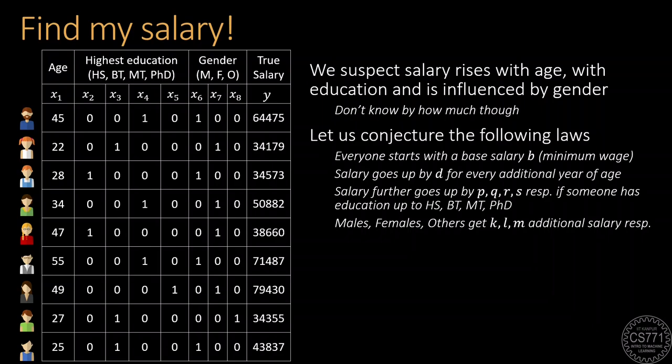So, let us conjecture the following set of laws to explain this data. Remember, that machine learning at its core is all about discovering laws that govern the data. So, let's say that everyone gets a base salary B. You can think of this as minimum wage and that salary would go up by an amount D for every additional year of experience. Salary would further go up by amounts P, Q, R and S if someone has education up to higher secondary, B-Tech, M-Tech or PhD. We assume that the gender of the person also influences the salary by giving them an additional amount that is related to their gender.